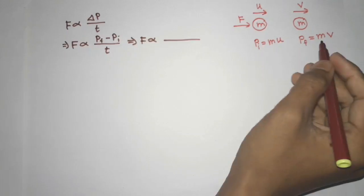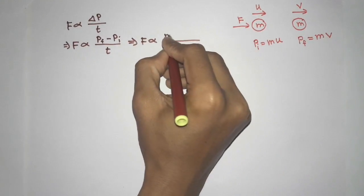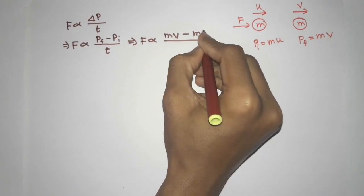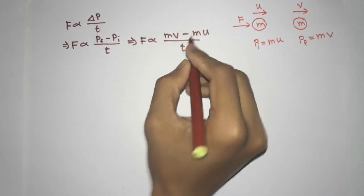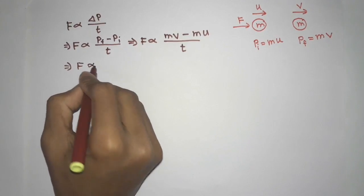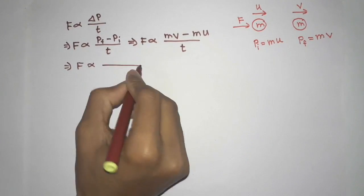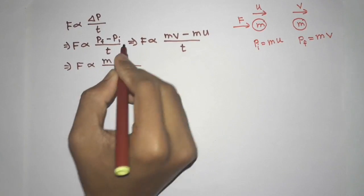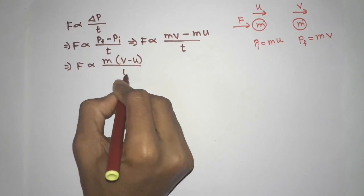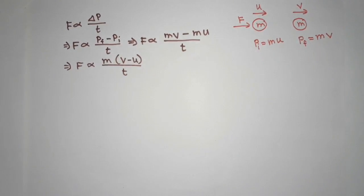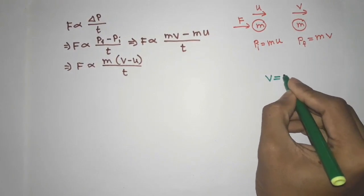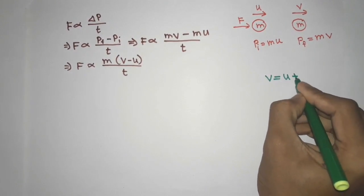This implies force is proportional to: p-final minus p-initial divided by t. Now, p-final is equal to m into final velocity v, and p-initial is equal to m into initial velocity u, divided by t. Taking mass common, we get force is proportional to m times (v minus u) divided by t. According to the equation of motion, v equals u plus at.